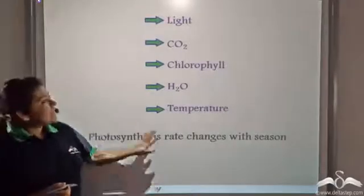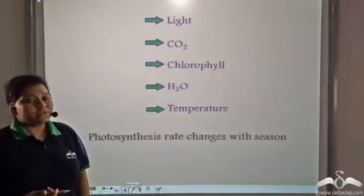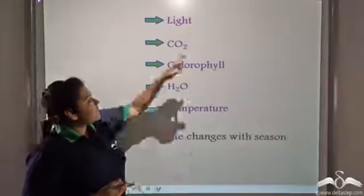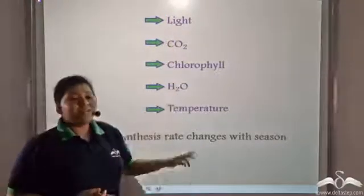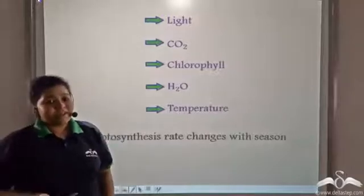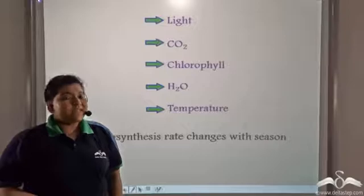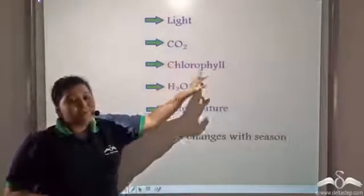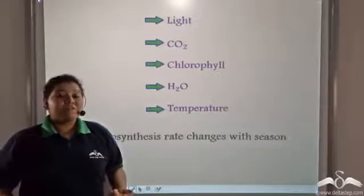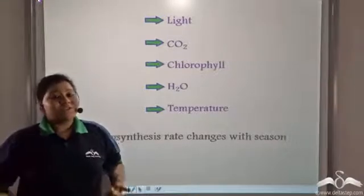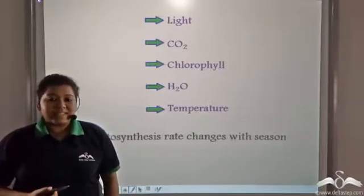So these are the various factors which alter the rate of photosynthesis. Out of these, light, carbon dioxide, water and temperature are environmental factors which change during the various seasons. And also chlorophyll, we have discussed this, the amount of chlorophyll present in a plant also changes seasonally thus affecting the rate of photosynthesis.